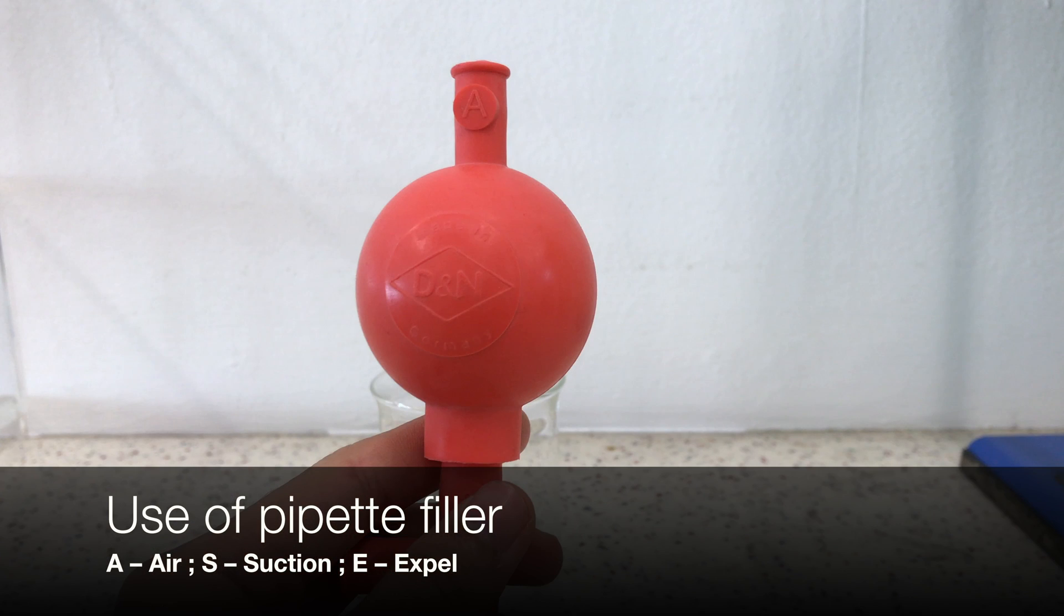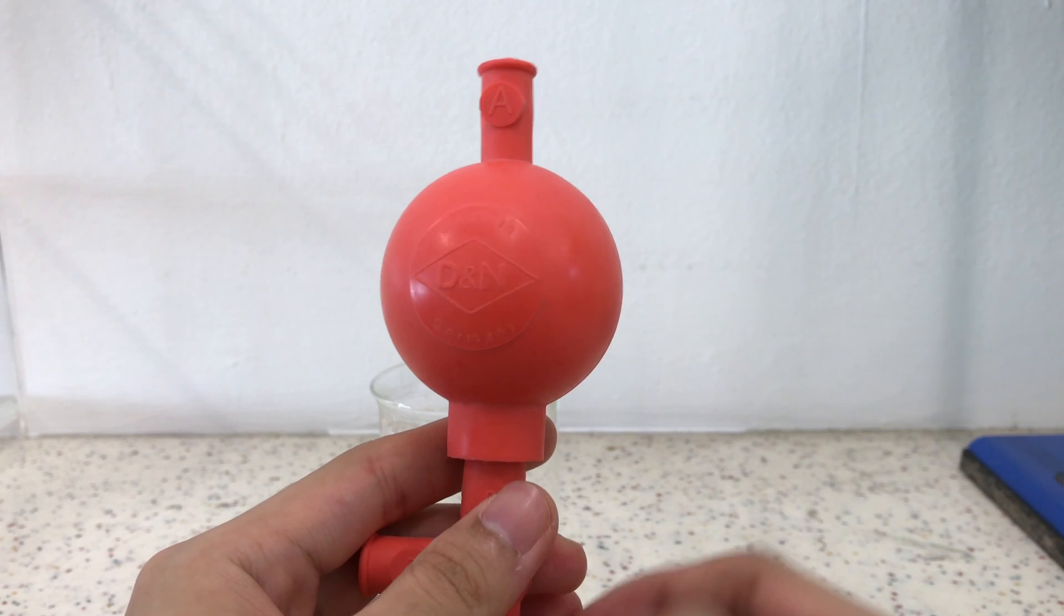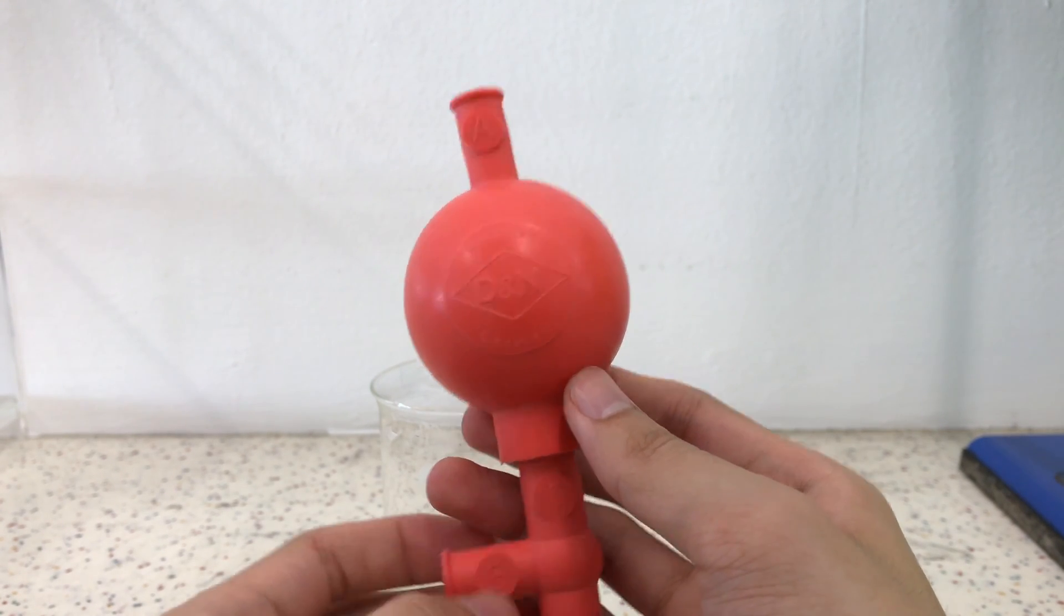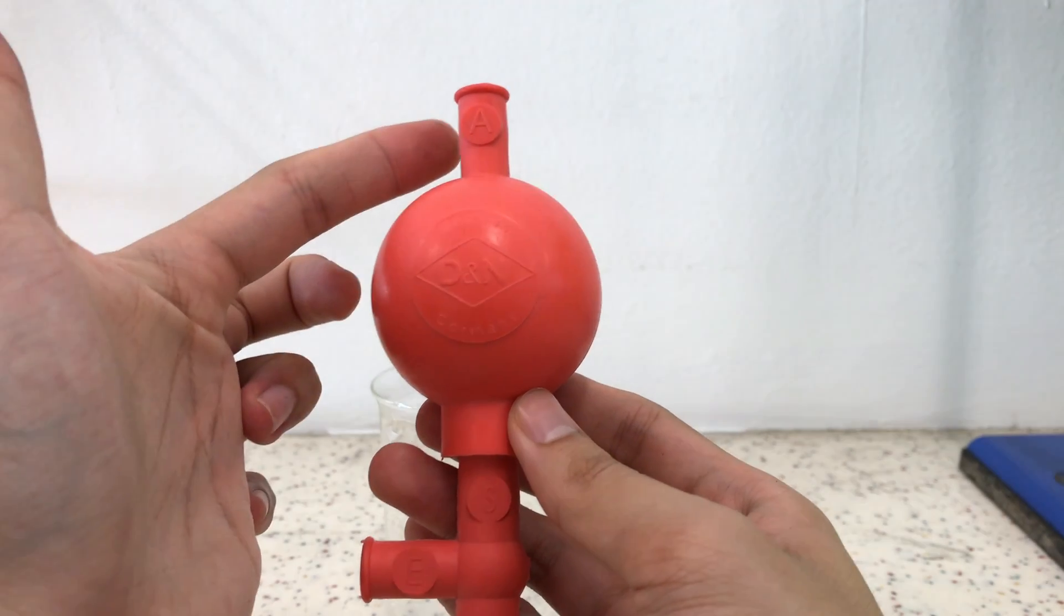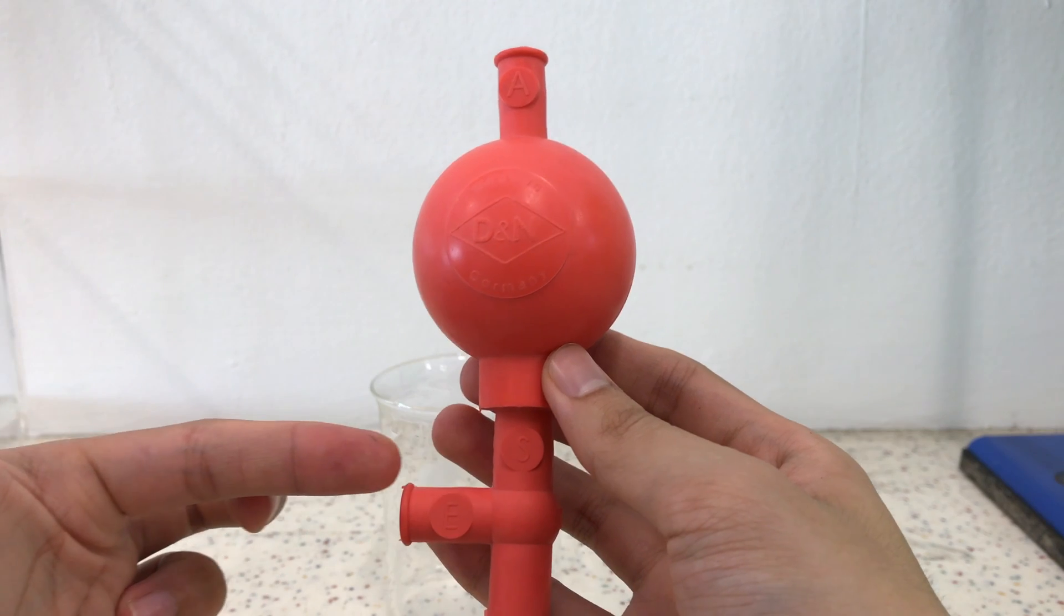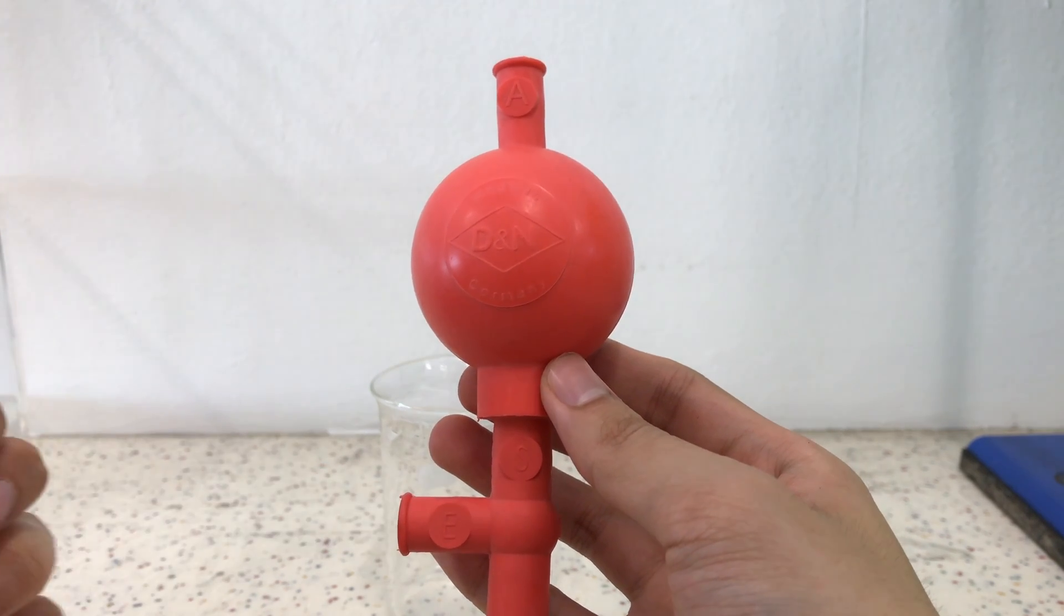Let's look at how to use a pipette filler. There are three buttons: one that says A for air, one that says S for suction, and the last one says E for expel.